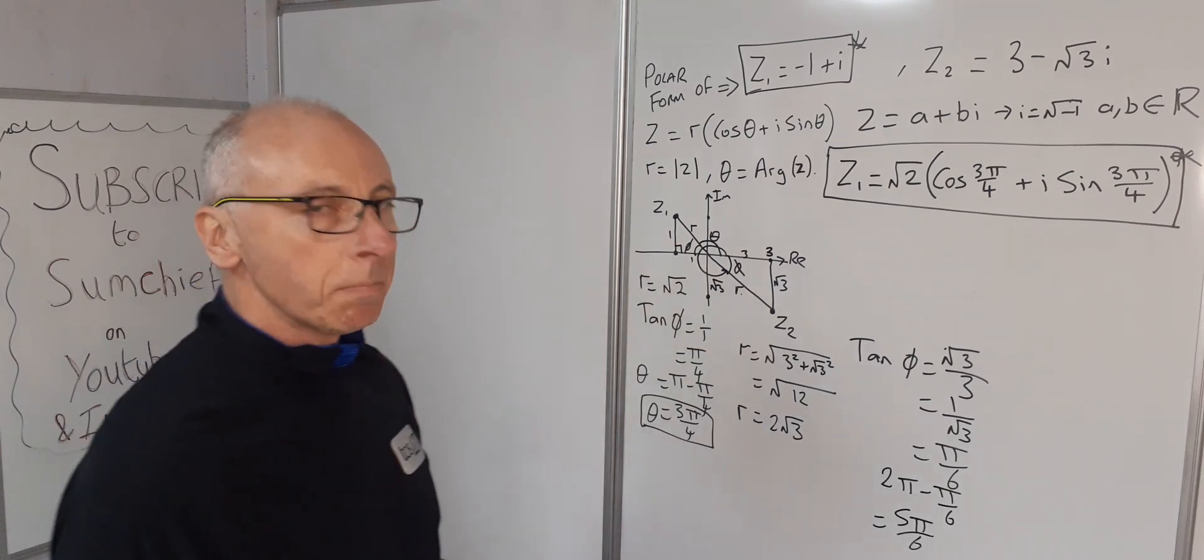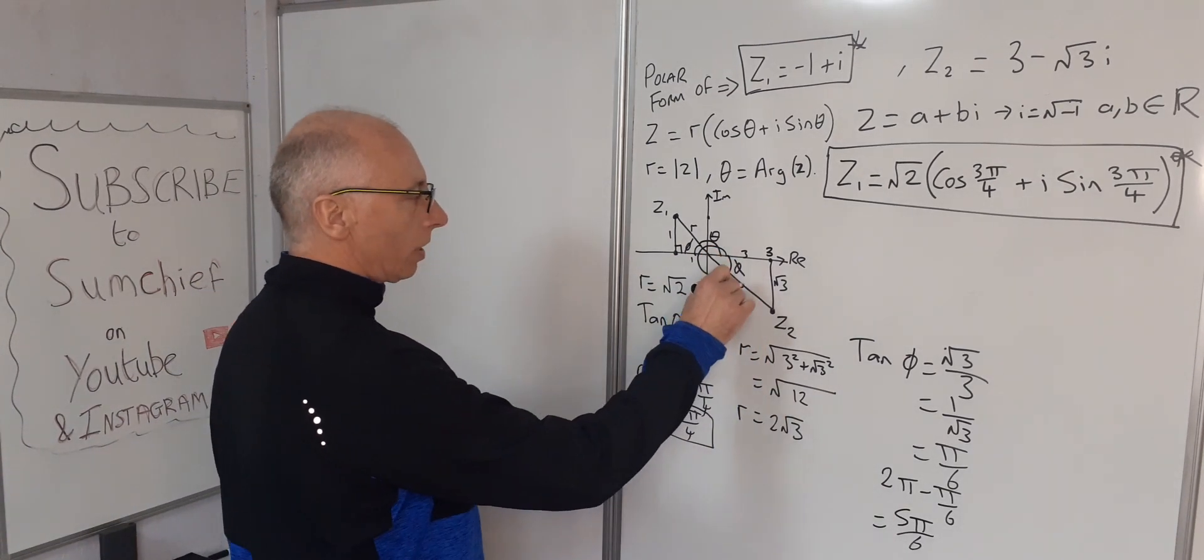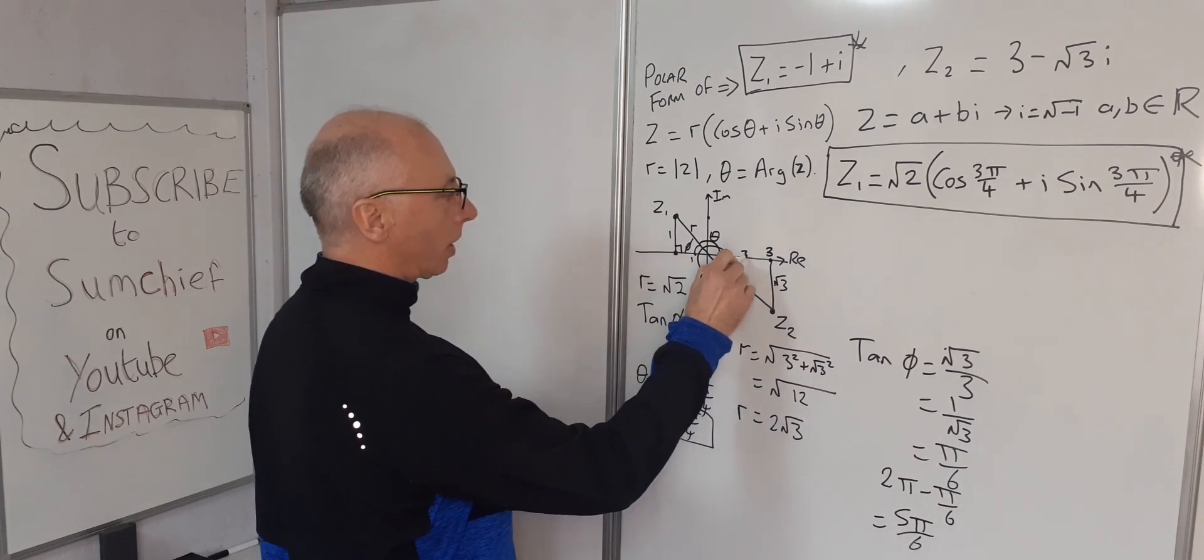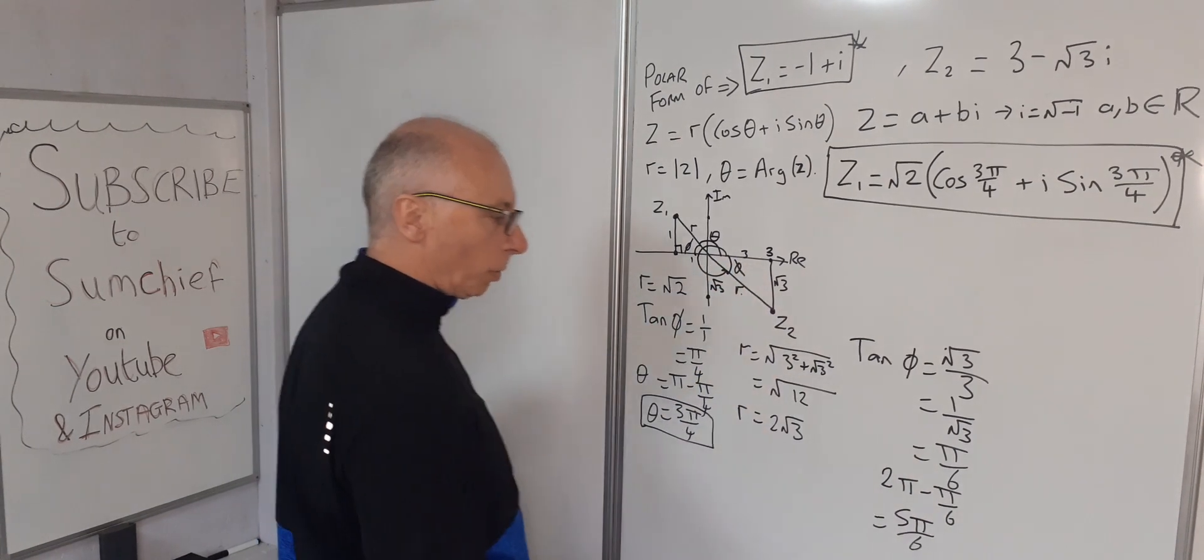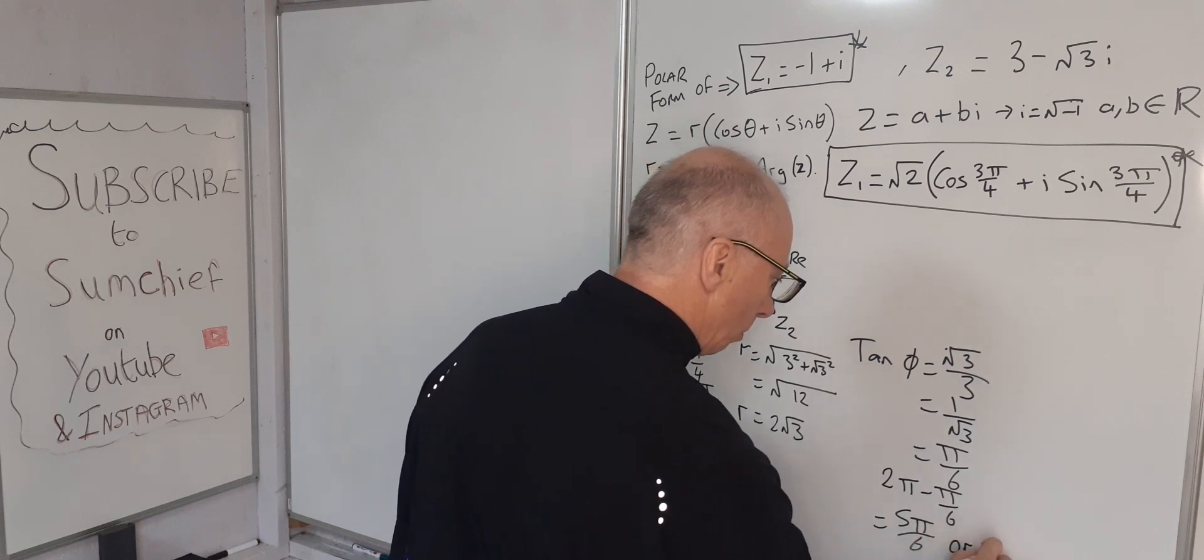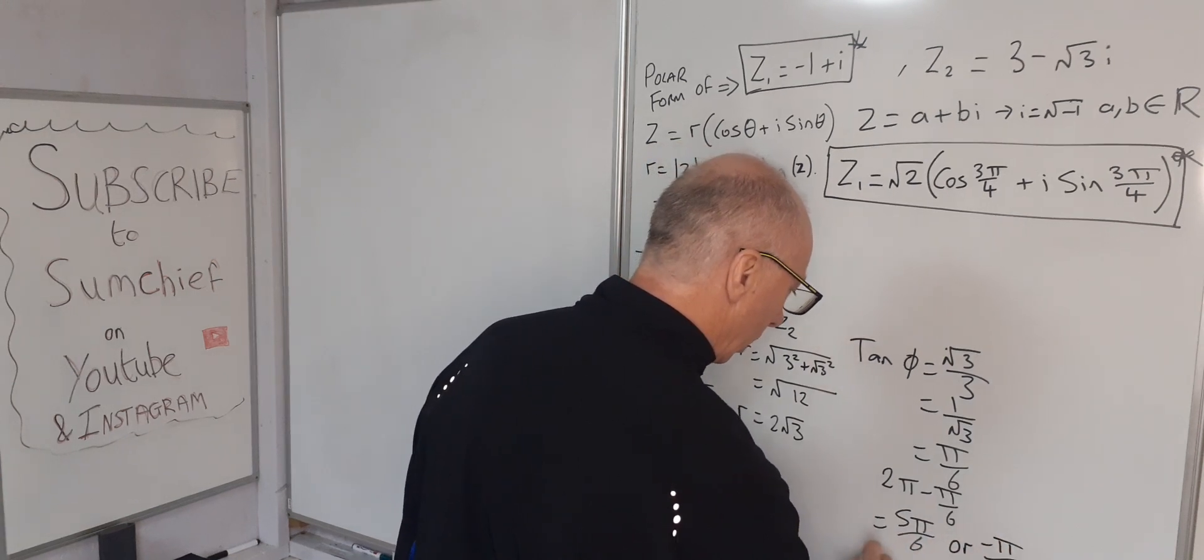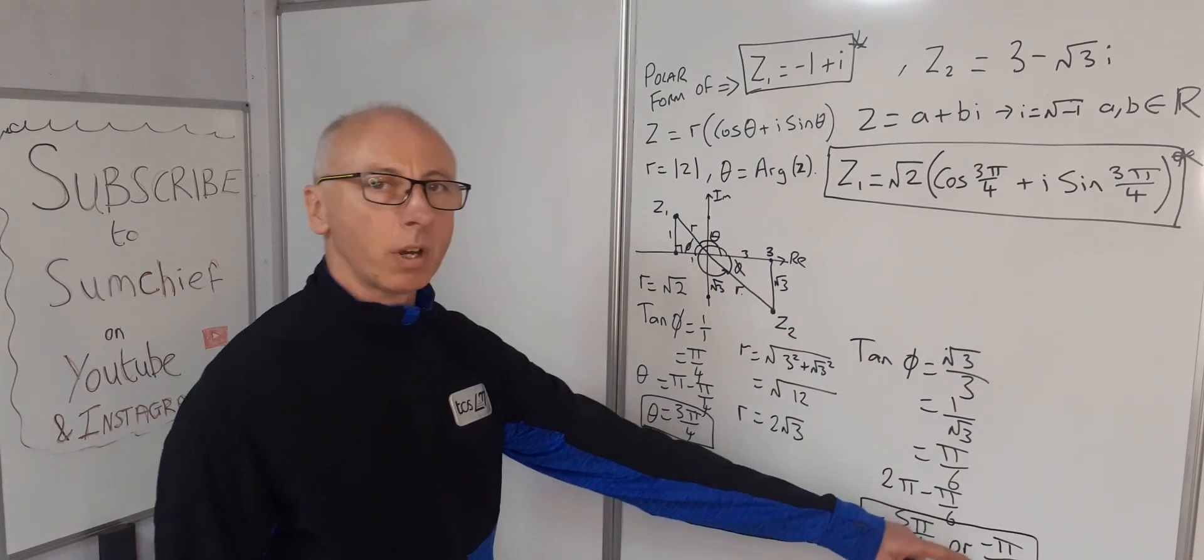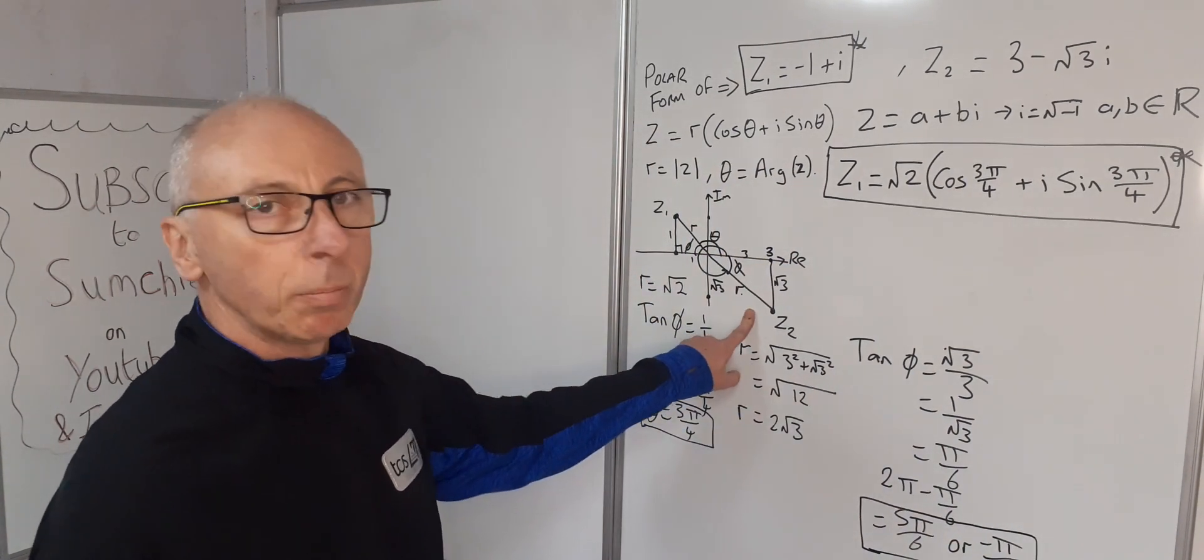Alternatively, we could call it -π/6. We can go in this direction here, which is this angle π/6, then going in the clockwise direction just becomes -π/6. Or -π/6. You can pick whichever one you like there; both are legitimate for polar form.